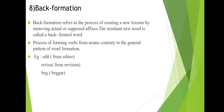The next process is back formation. Back formation refers to the process of creating a new lexeme by removing actual or supposed affixes. The result is called a back-formed word — it is the process of forming words from nouns contrary to the general pattern of word formation. For example, 'editor' is the noun, and 'edit' is derived from it by removing the affix '-or'. That is derivation by removing affixes — back formation.